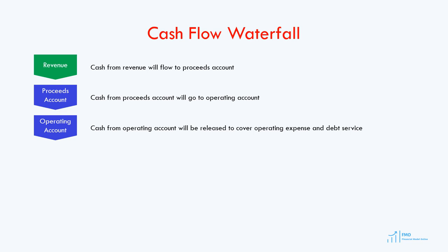After covering the operating costs and debt service, the cash flow will go to the debt service reserve account, or DSRA. The cash reserves in the debt service reserve account can be used if the project generates insufficient cash flow to service the debt. Commonly, six months' worth of future debt service is kept at the DSRA.